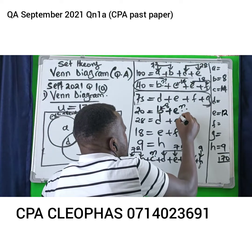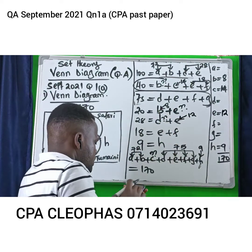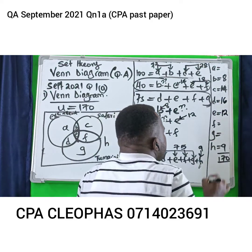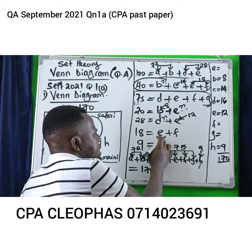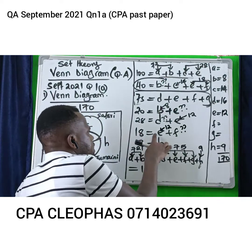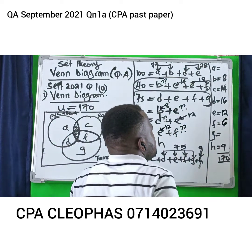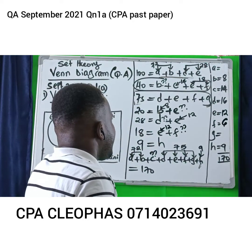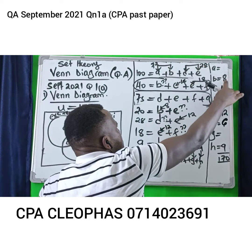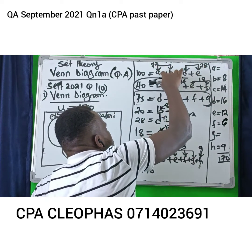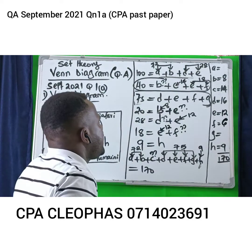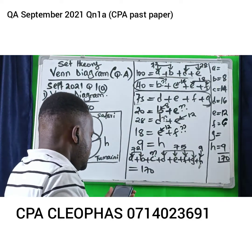If E is 12, then D will be 28 minus 12 equals 16. So D is 16. And if E is 12, from the equation E plus F equals 18, then F is 18 minus 12 equals 6. So F is 6. Which other equation? I can use the first equation A plus B equals 72. B alone is 8, so 72 minus 8 gives A equals 64.